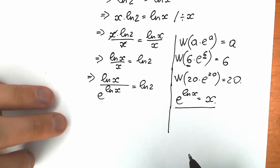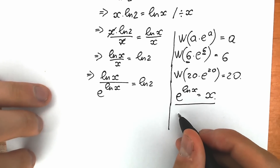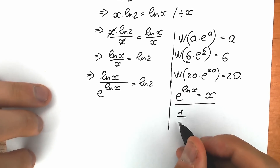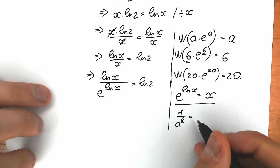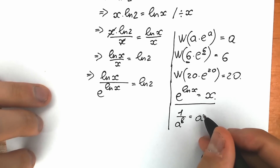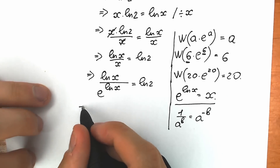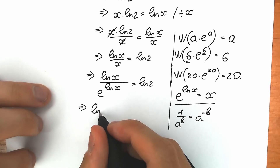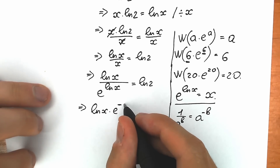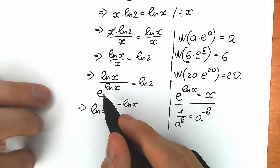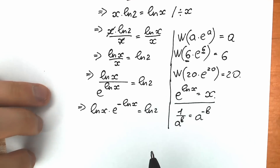Now, we can bring e^(natural log x) from the denominator to the numerator using the power rule: 1 divided by a to the power b becomes a to the power negative b. So bringing it up, we have natural log x times e to the power negative natural log x, equal to natural log 2.